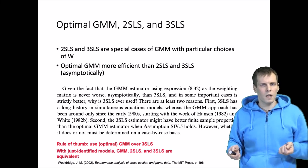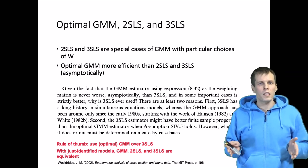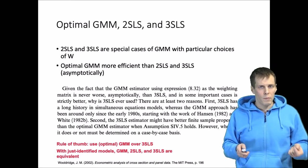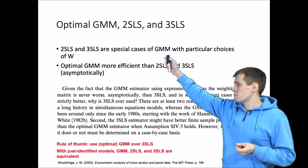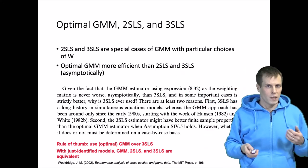However, for just-identified models, if your degrees of freedom is zero, then all these produce the exact same result, in which case you should use the simplest one, which is two-stage least squares. Importantly, using these rules of thumb, you would never need to use three-stage least squares.